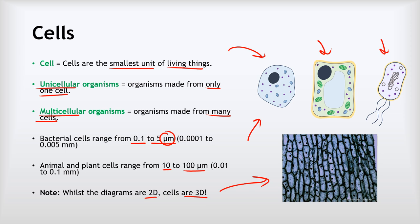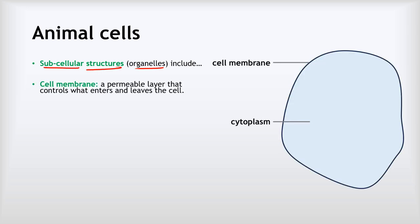So let's look at our first kind of cell - this is an animal cell. Now animal cells, as all cells are, are made from a range of what we call subcellular structures. Sometimes we call them organelles as well, and these are the individual parts that a cell is made from. Now there are five subcellular structures that we need to know about in animal cells.